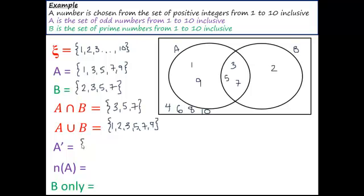Not A: which numbers are not in A? So A was 1, 3, 5, 7, 9. So not A would be the even numbers. This is asking how many elements are in A. We've got 5 odd numbers. And this is what is in only B. In only B is just the number 2.